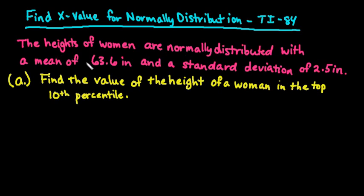The heights of women are normally distributed with a mean of 63.6 inches and a standard deviation of 2.5 inches. What we are going to do is find the value of the height of a woman in the top 10th percentile. So with this, if you are using a table, what you would have to do first is find the z-score and you would have to pull up your table and look for the 90th percentile because that's the area to the left. And you would find the z-score and then you would use this formula: x equals the mean plus the z-score times the standard deviation.